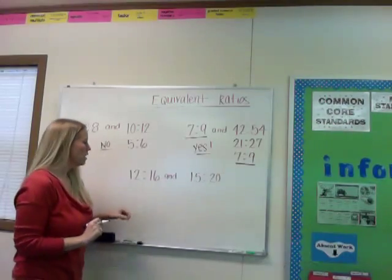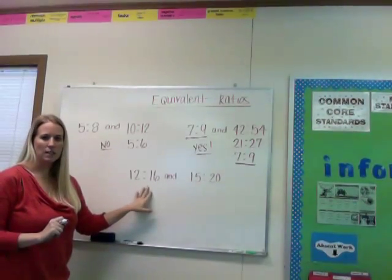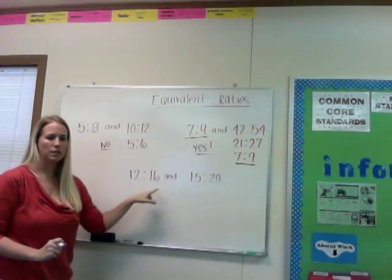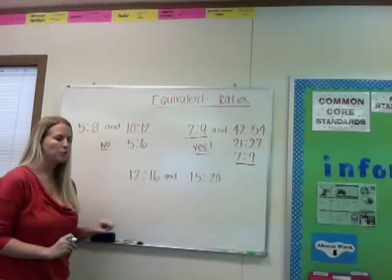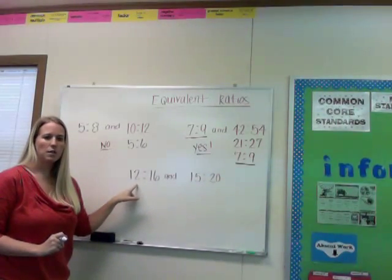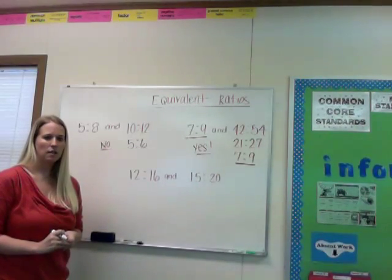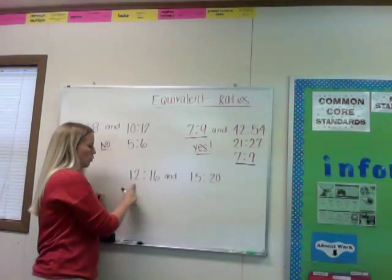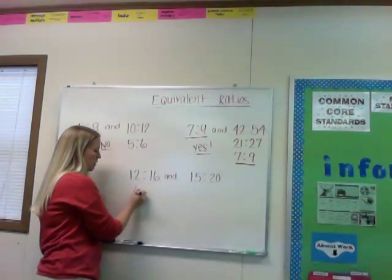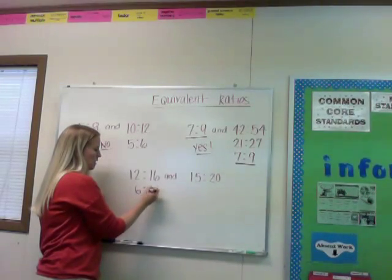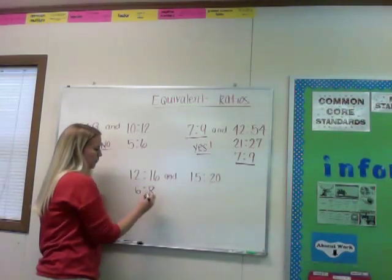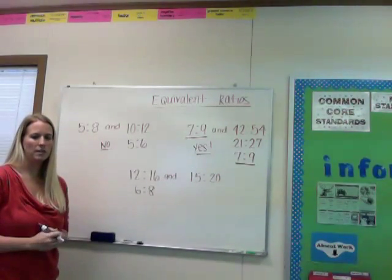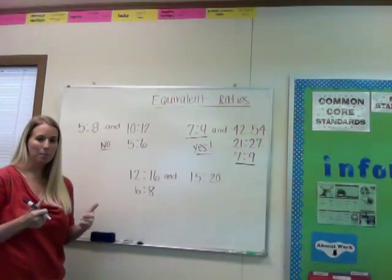I'm going to do one more. We have 12 to 16 and 15 to 20. We need to first write both of these in simplest form. I'm going to start with 12 to 16. What's a number that can go into both 12 and 16? Since they're both even, I'm going to use the number 2. 12 divided by 2 is 6, and 16 divided by 2 is 8. Maybe some of you right away saw that 4 would work for both, and you already have it in simplest form — good job!